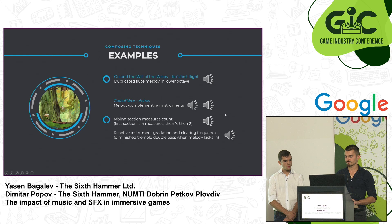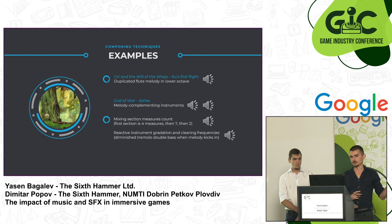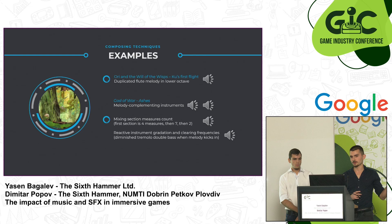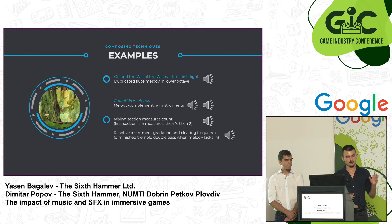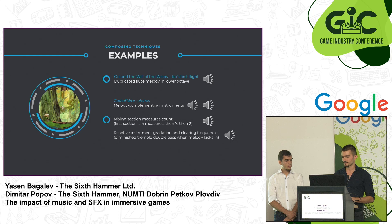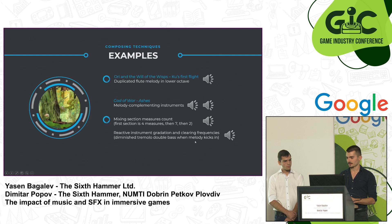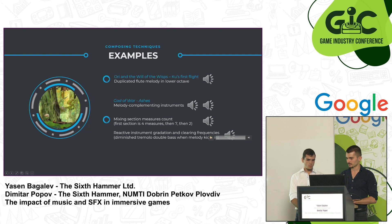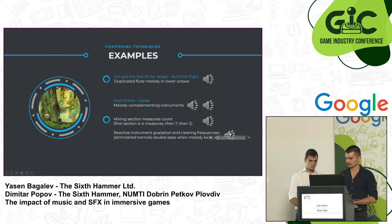Next is an example of avoiding repetitiveness from God of War. There is a section that is four measures long, followed by one that is seven measures long, then one that is only two measures long — and they even change the beats per measure. The last example demonstrates a reactive build-up where they lower down some instruments during the build-up, and the tremolo disappears when the main melody kicks in.